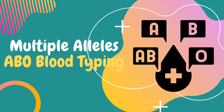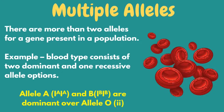To start this lesson, let's define first multiple alleles. Multiple alleles is when there are more than two alleles for a gene present in a population. An example is our blood type. Blood type consists of two dominant and one recessive allele options, wherein both allele A and B are dominant over allele O.